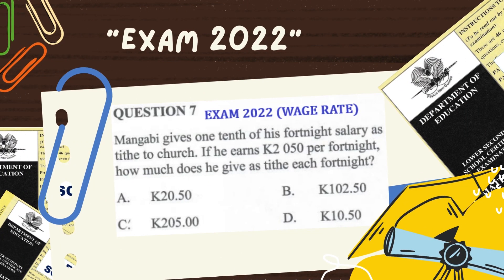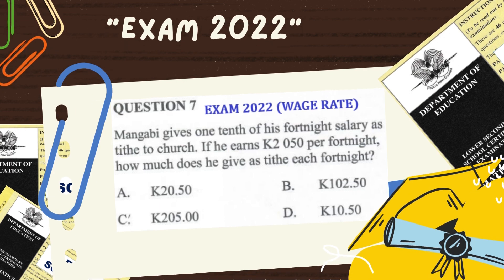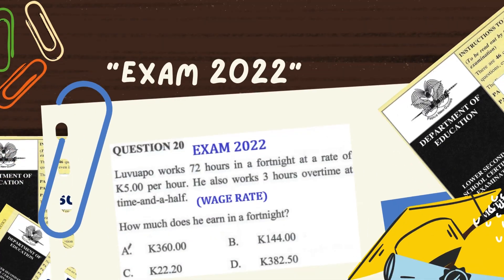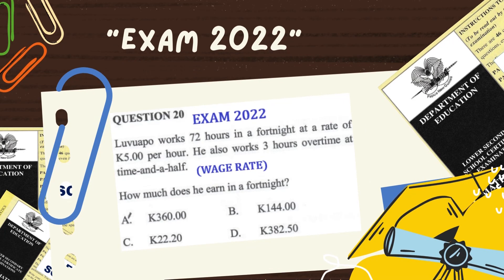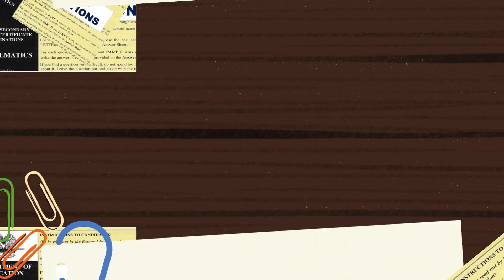Rate questions in 2022 were mostly based on wage and cost per item. If you look at question number seven, the setting is about how much a person can earn in a fortnight plus their commitment towards church. Again, the setting is similar to question seven, but this time it also included an overtime payment.